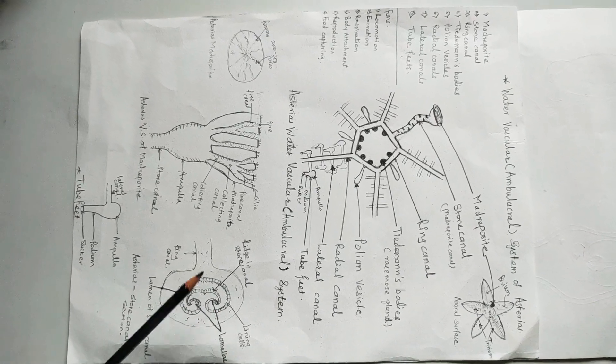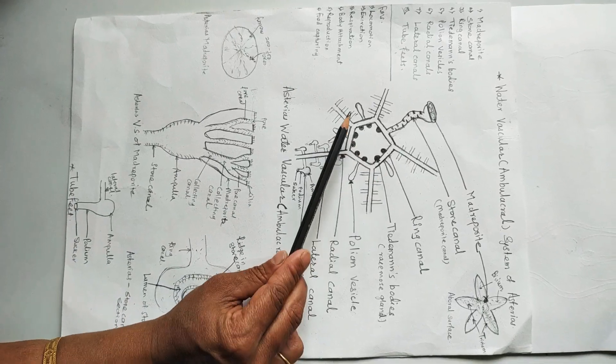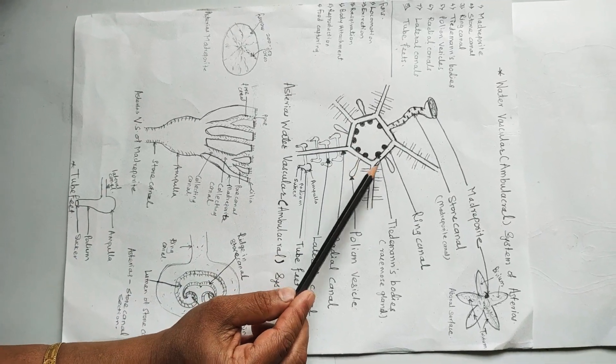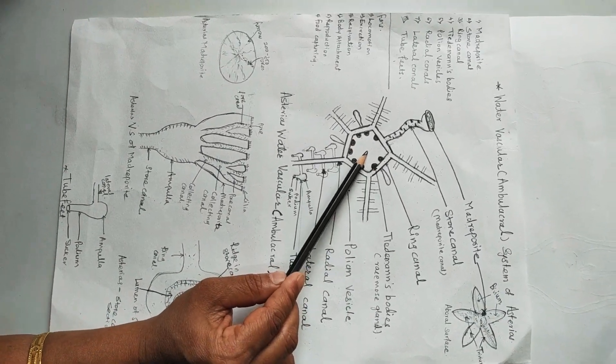Next part is the ring canal. Ring canal is a wide five-sided pentagonal ring-like structure situated just around the mouth.